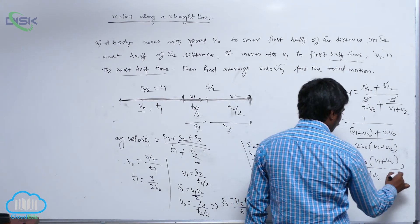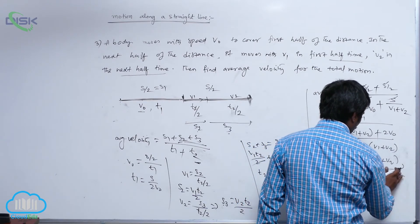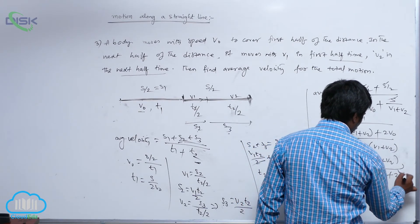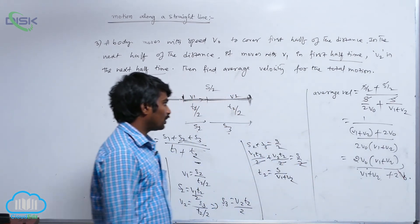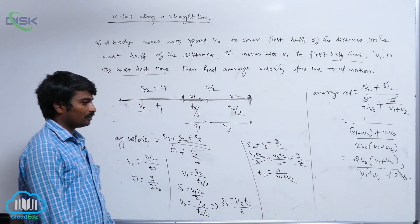So the final answer for average velocity is 2v0(v1+v2) divided by (v1+v2+2v0). This is the average velocity for the total motion.